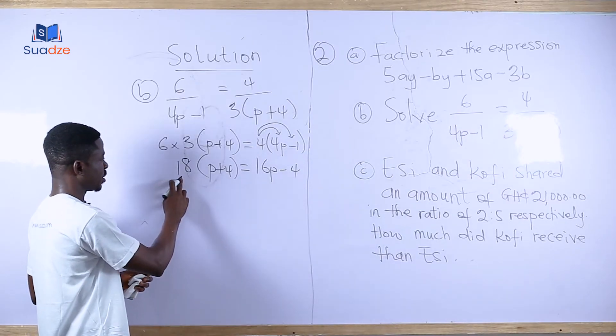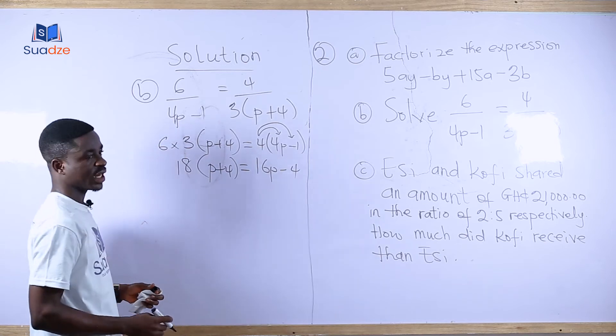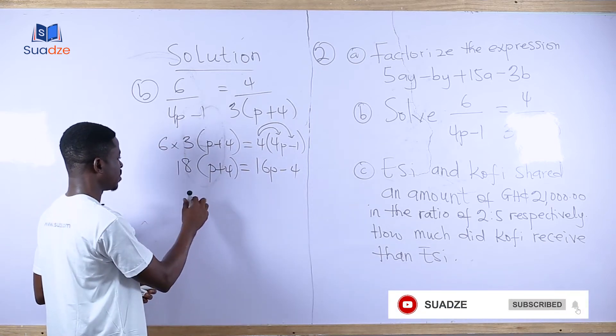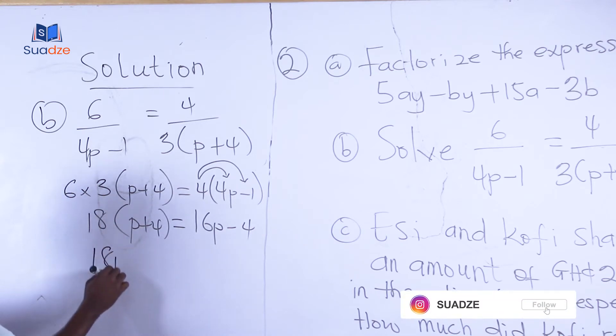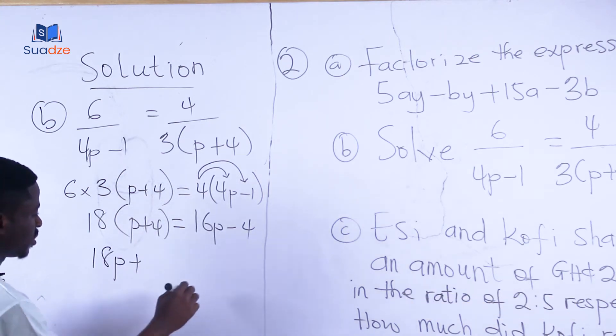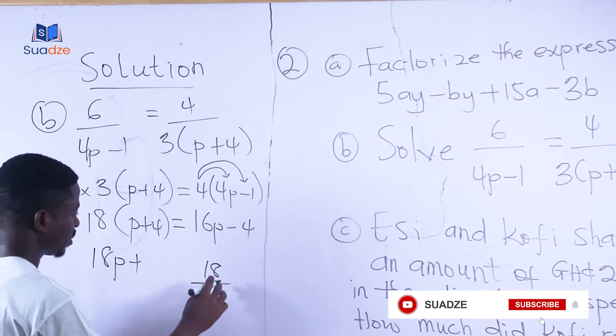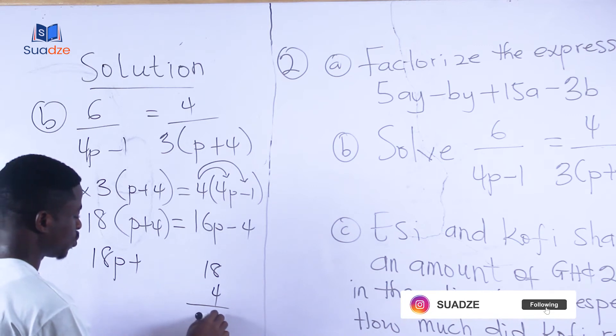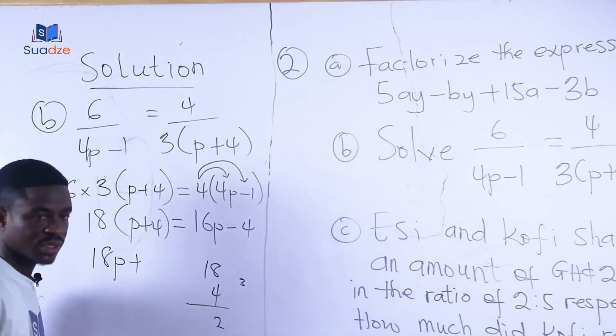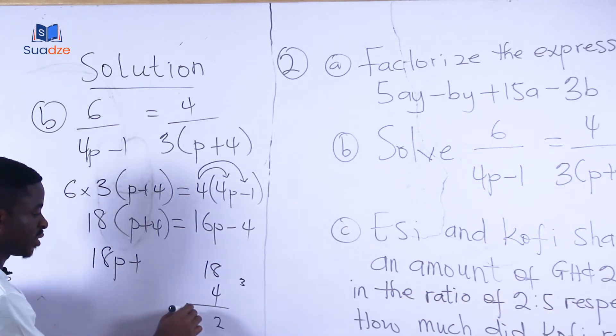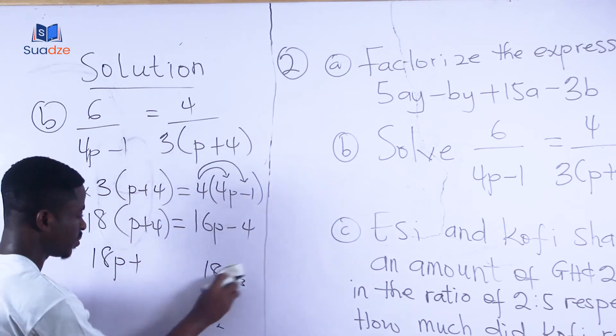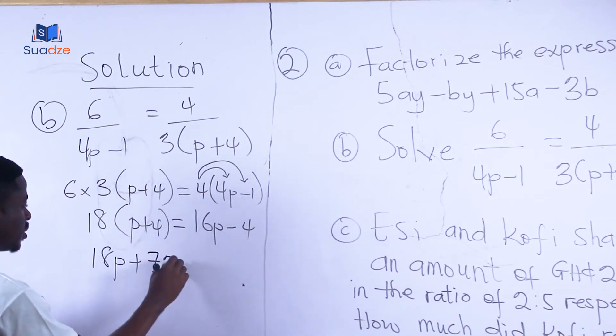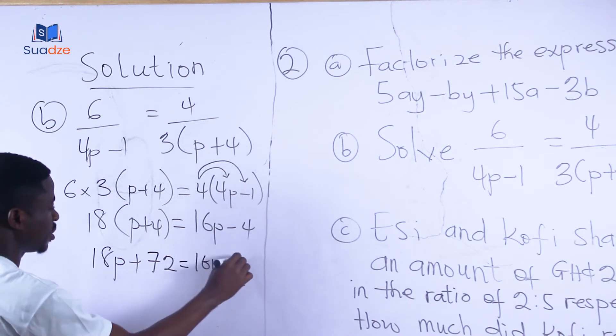We are going to use the numbers outside the brackets to multiply the ones inside the brackets. So 18 times this will give us 18p plus 18 times 4, which is 72, equals 16p - 4.